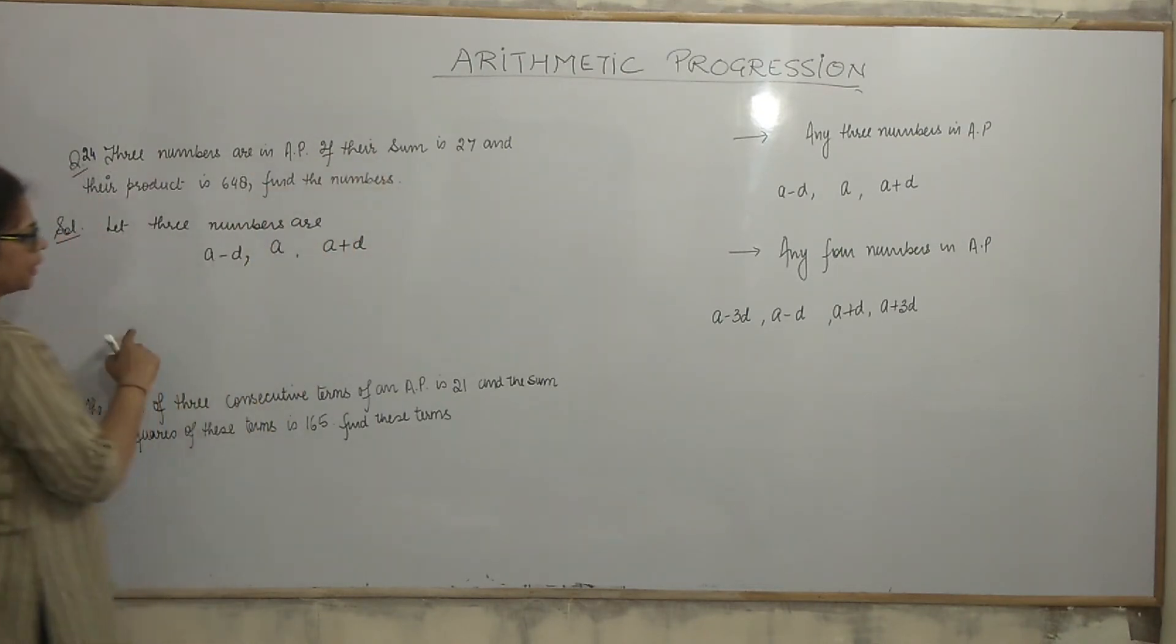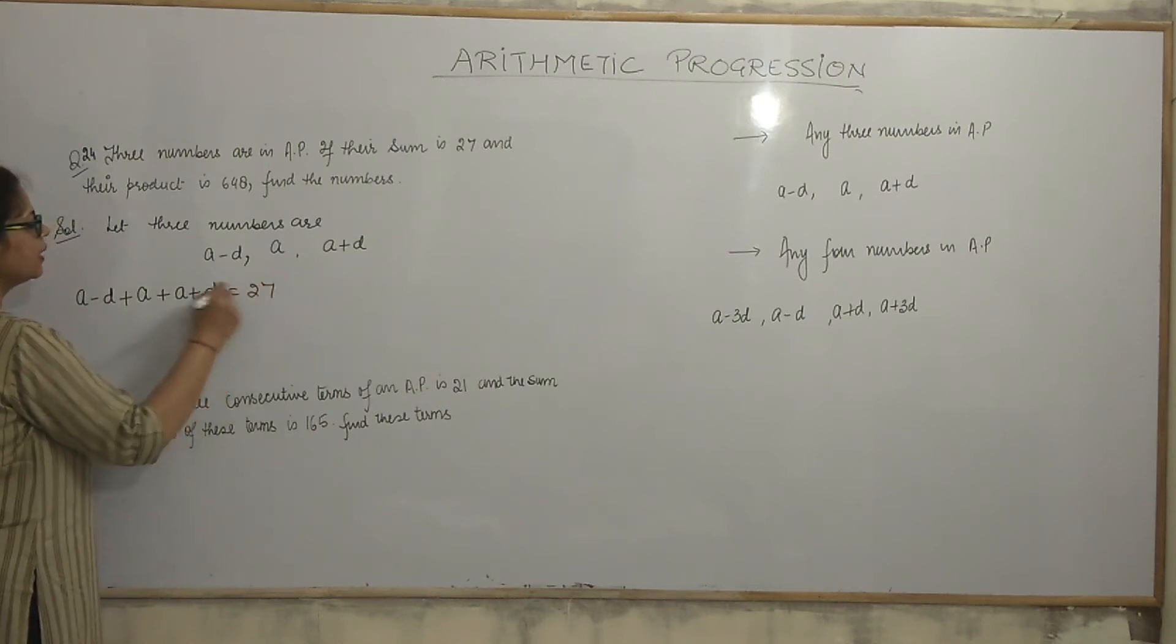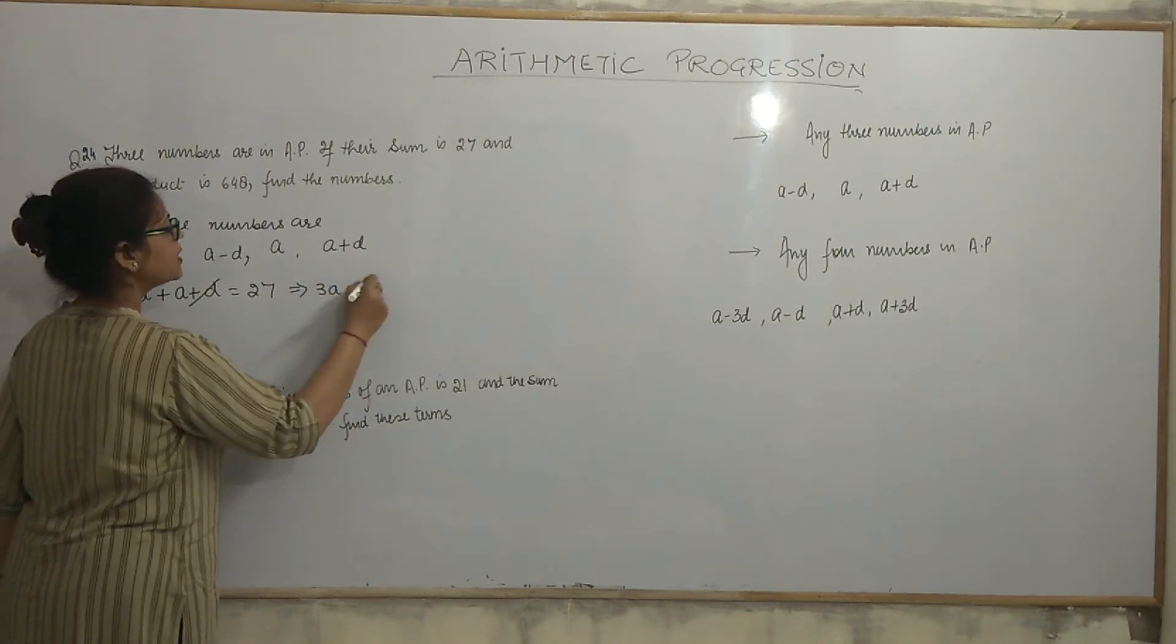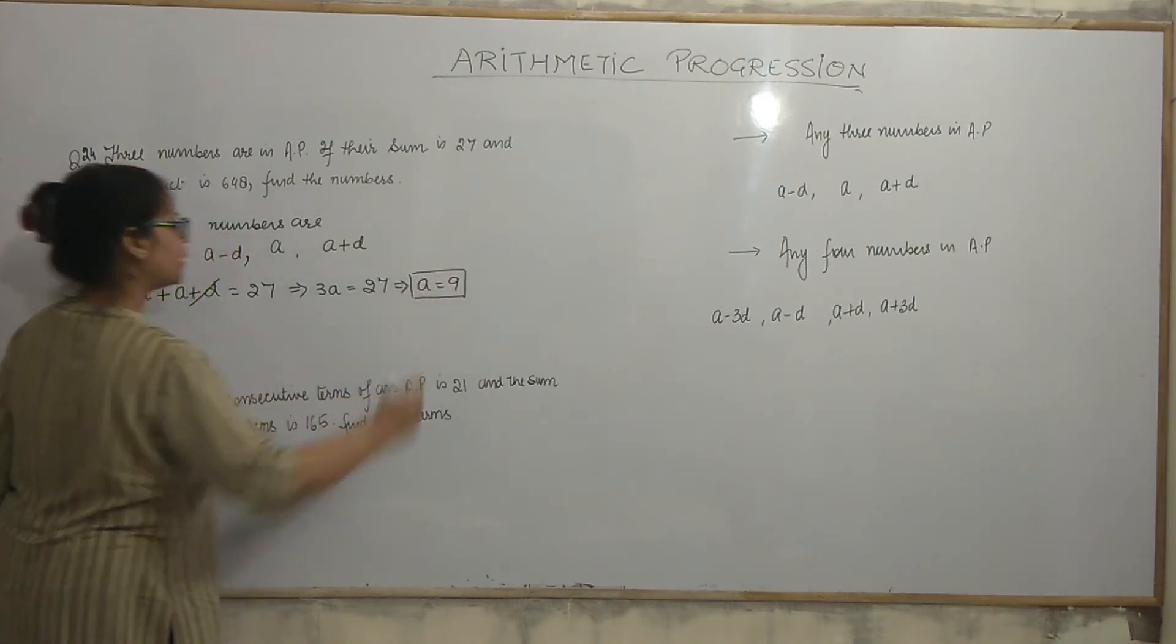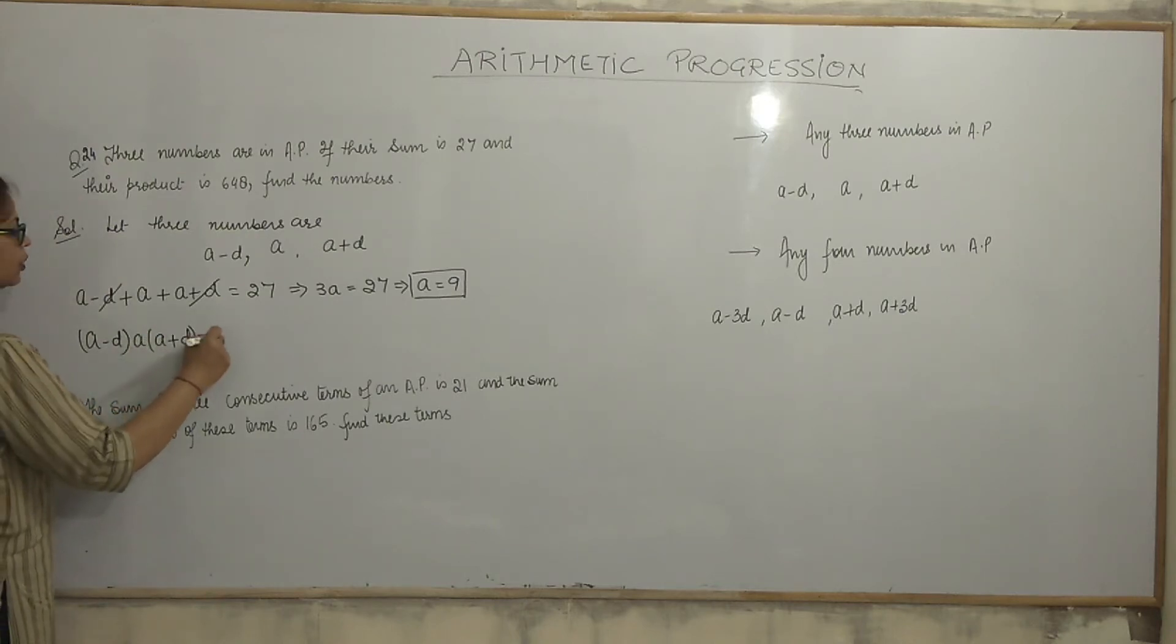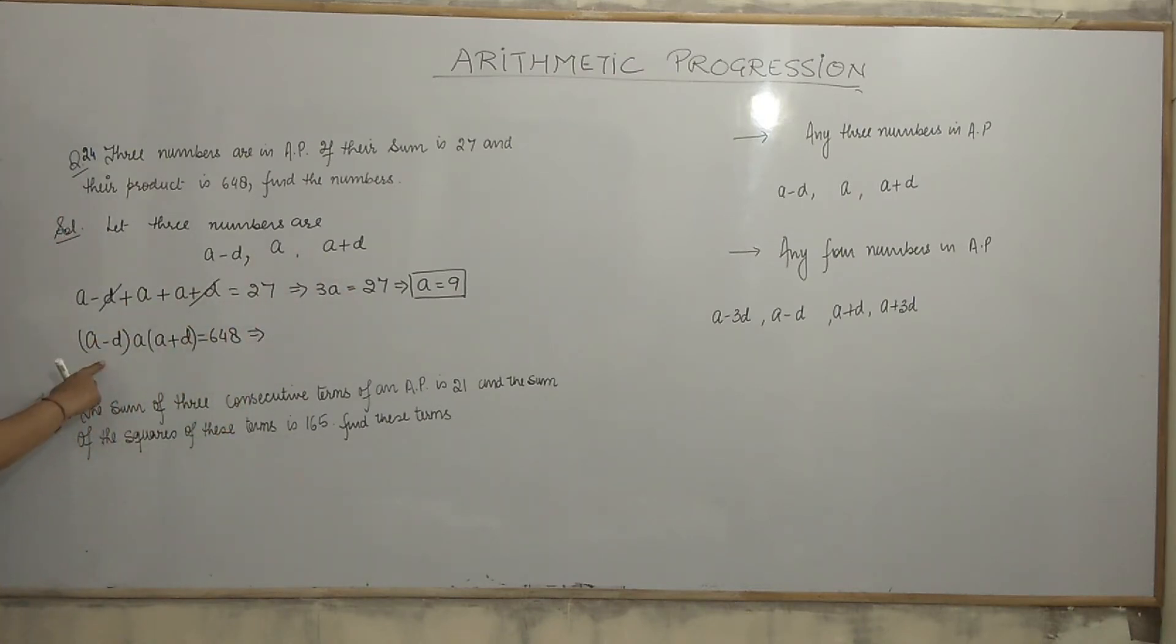Moving to the question. Three numbers are in AP. Solution. Let three numbers are a minus d, a, a plus d. You are giving sum is 27. So, a minus d plus a plus a plus d is equal to 27. d and d cancel out. 3a is equal to 27. So, a is equal to 9.